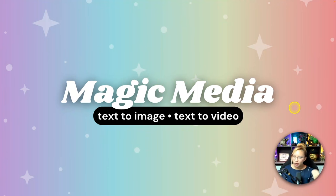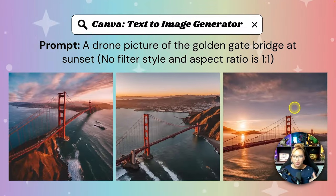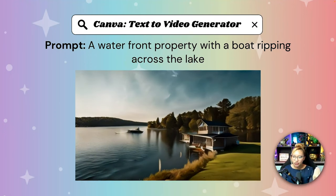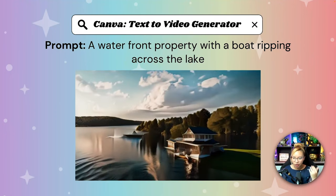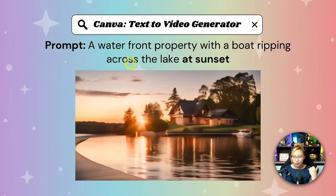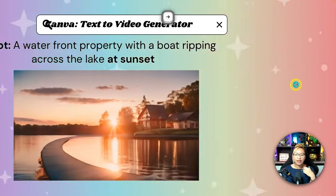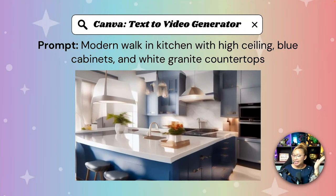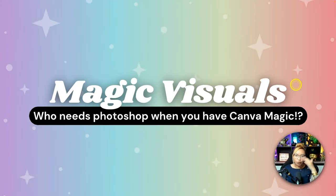Next up we have Magic Media — text-to-image, which many of you may be aware of from the wave of AI content on YouTube — and then the new text-to-video feature on the platform. The text-to-image generator lets you put in a prompt, add a style and aspect ratio, and choose a filter like filmic. We also have the text-to-video generator: depending on the prompt it will generate a video — one I tested was a sunset scene, and another was a modern walk-in kitchen with high ceilings, blue cabinets, and white granite countertops. It's still pretty much in beta, but it will get better the more we use it.